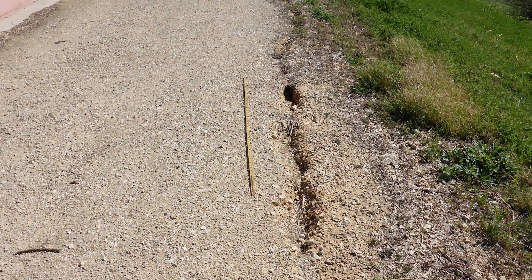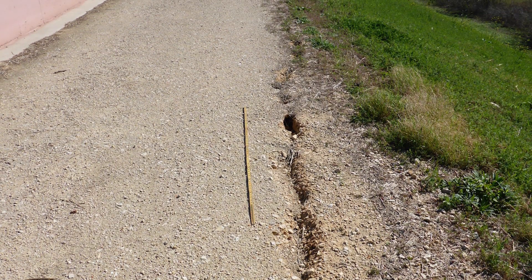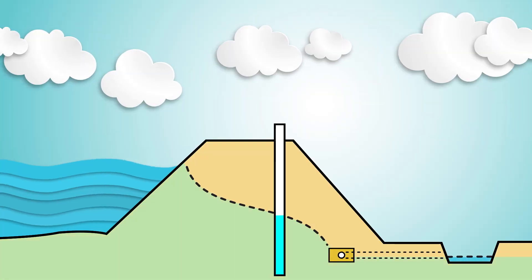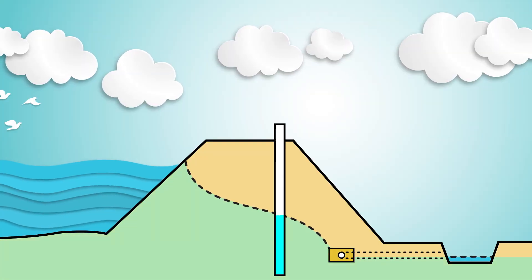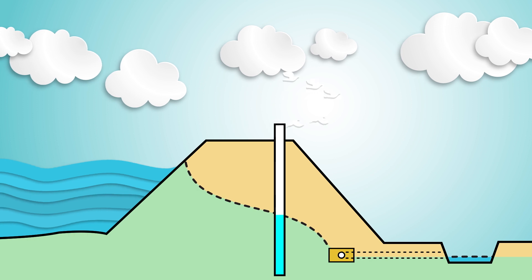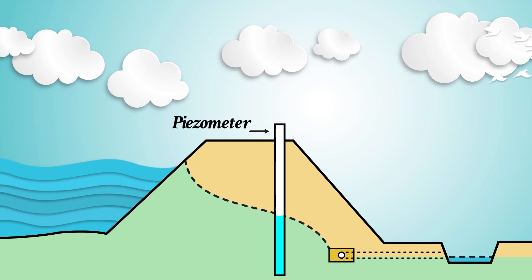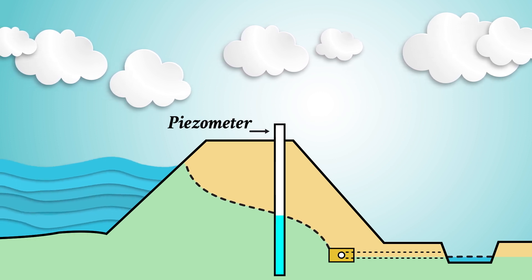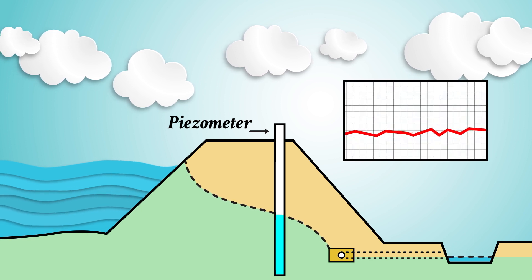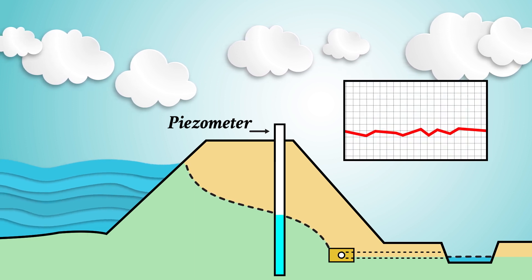Monitor major cracks in an embankment or concrete structure for displacement over time. Water pressure within your dam's foundation can provide a warning of potential stability concerns. Documenting changes in pressure using piezometers or observation wells can help an engineer understand how a dam is performing over time and analyze any issues that arise.